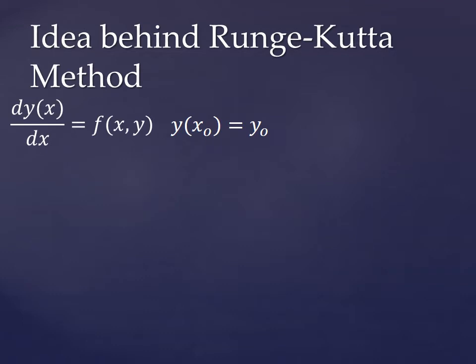So, what we have here is the idea behind our Runge-Kutta method. Just like we had the idea behind the Euler method and improved Euler method, you've got your differential equation and you've got some initial condition. Just like before, it claims that the slope of the solution curve, we have information about the solution curve, so we're going to use that, but in a little different strategy this time.